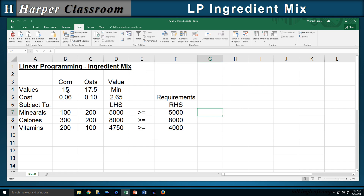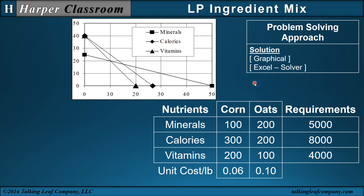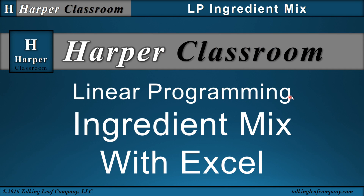My optimal solution is 15 pounds of corn and 17.5 pounds of oats, with a minimum cost of $2.65 per head of cattle. This ends the video on Linear Programming Ingredient Mix with Excel. I hope this helps — thanks for watching.